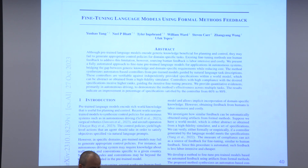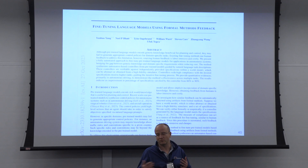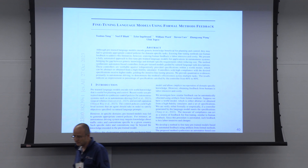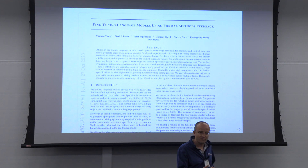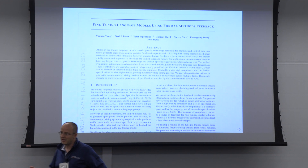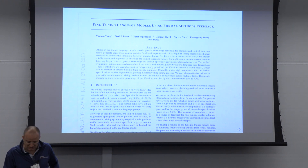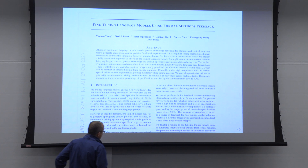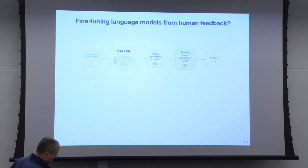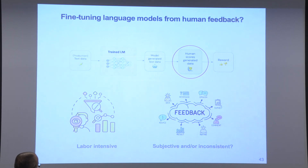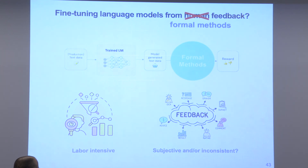The motivation is: a car manufacturer pre-trains something based on existing knowledge, then deploys the car in a new city or country where driving rules or cultural norms around driving are slightly different — even roundabout behavior varies from country to country. Can we refine such pre-trained models after deployment, incorporating additional knowledge we can reason about through formal verification? We try to replace the human scoring box with a formal methods artifact.